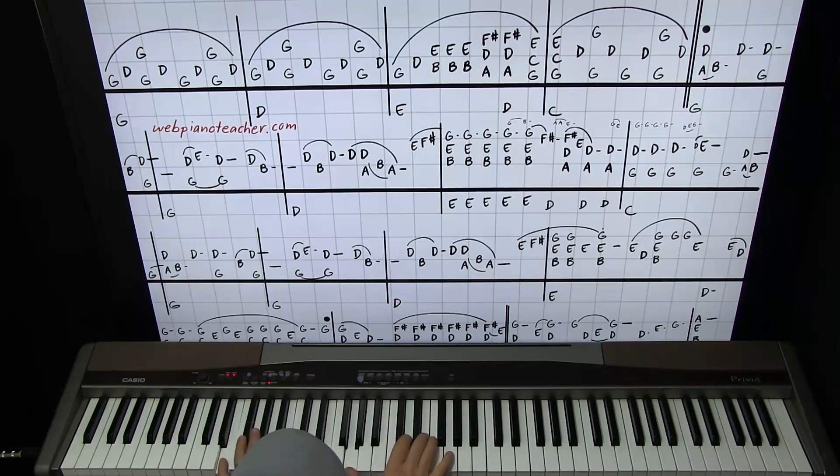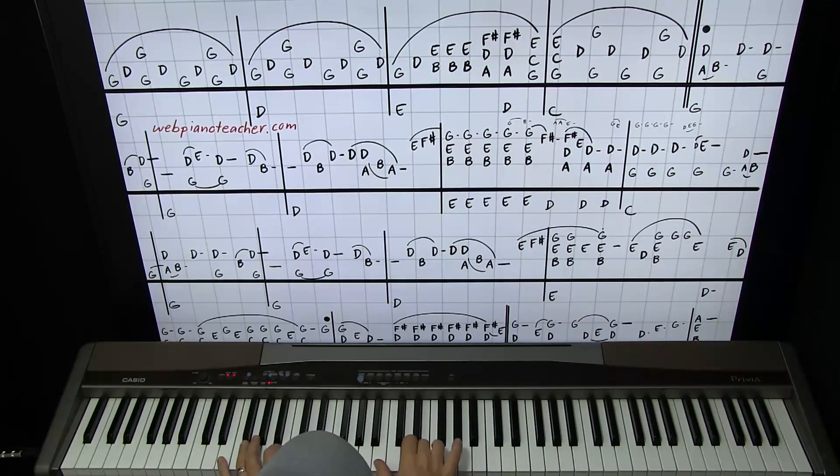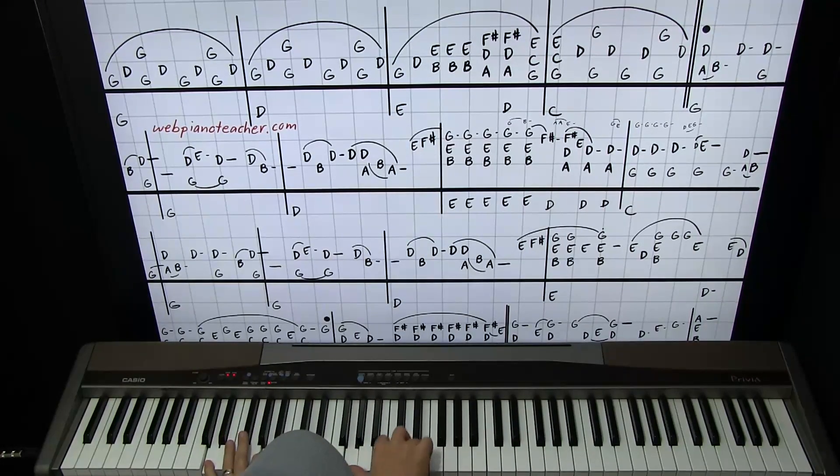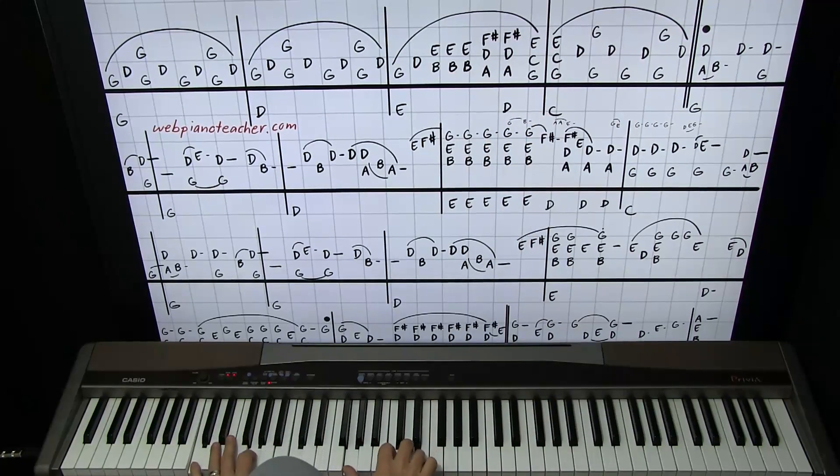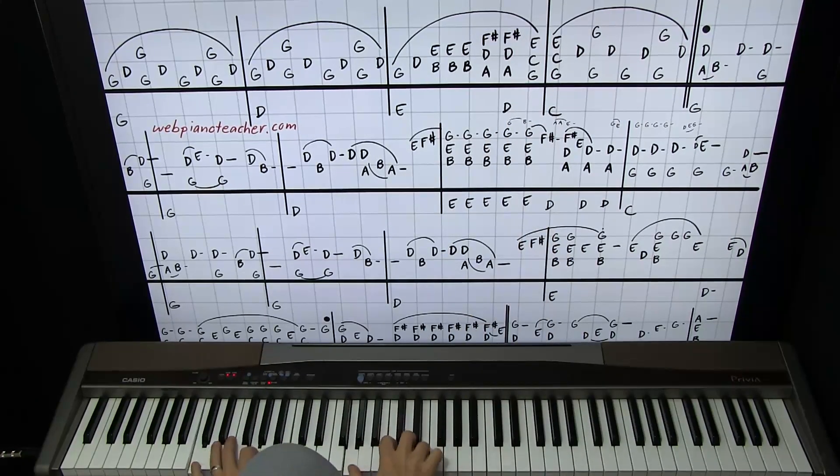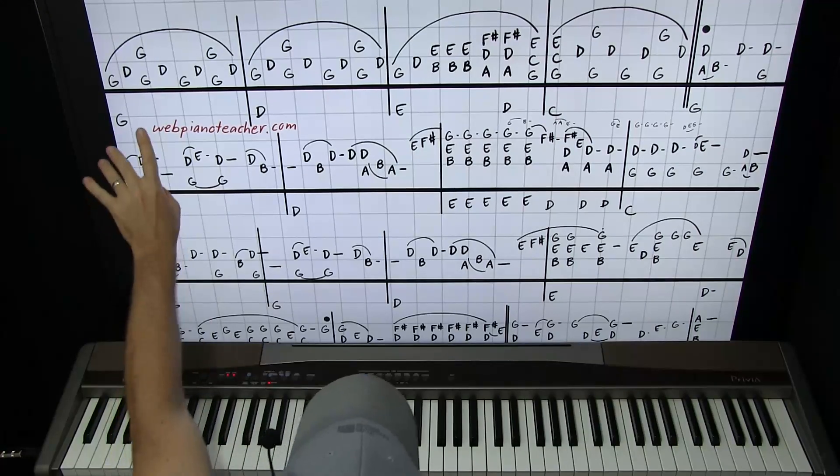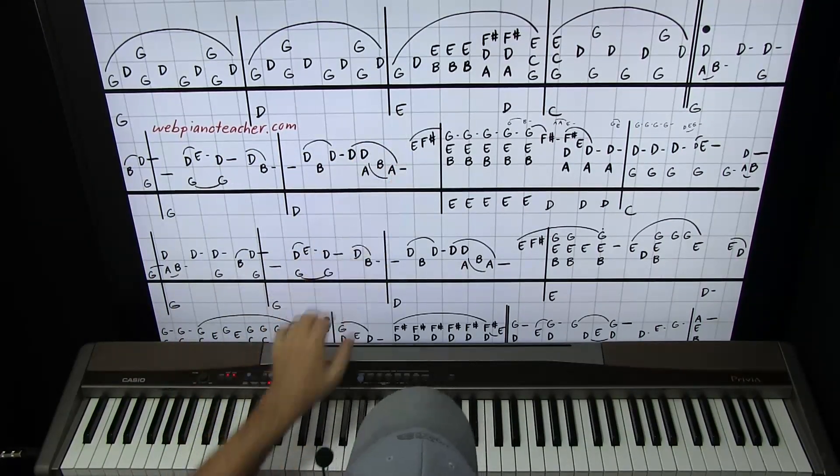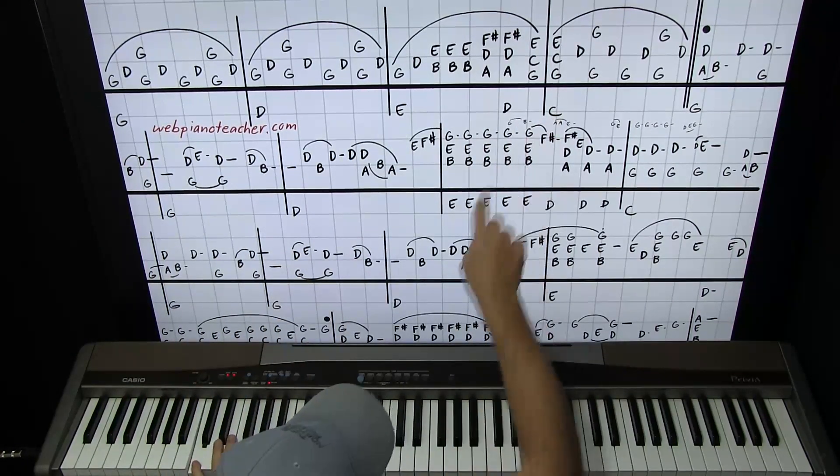So it's right here, one and two and three and four and. So notice where the left hand goes down, we go to a C chord here. By the way the chords, you have G chord, D chord, E minor, D, and then C chord.